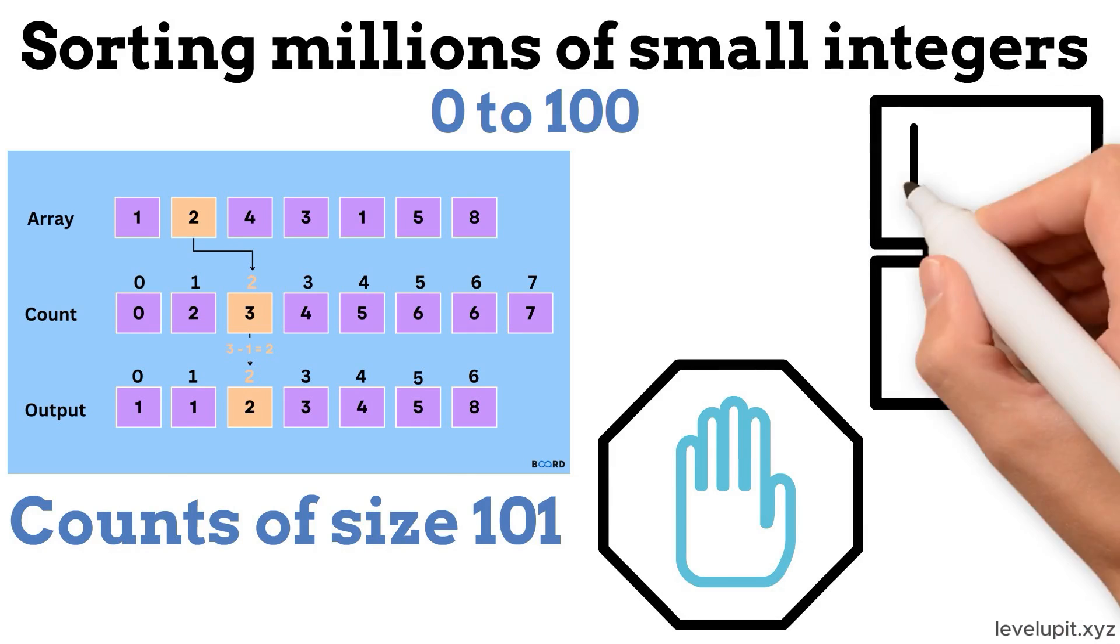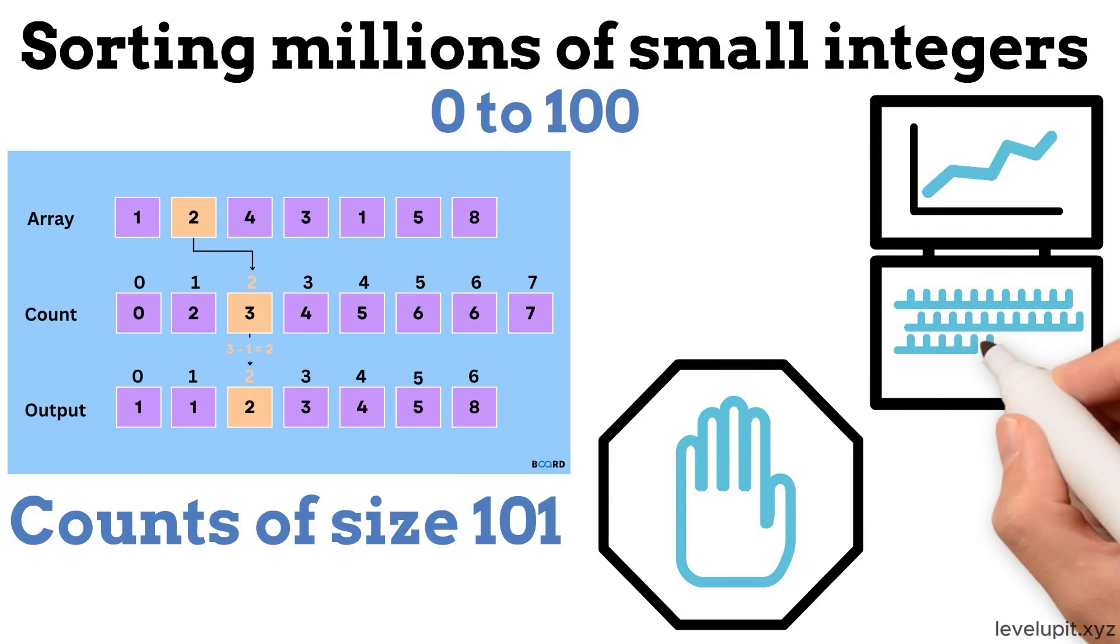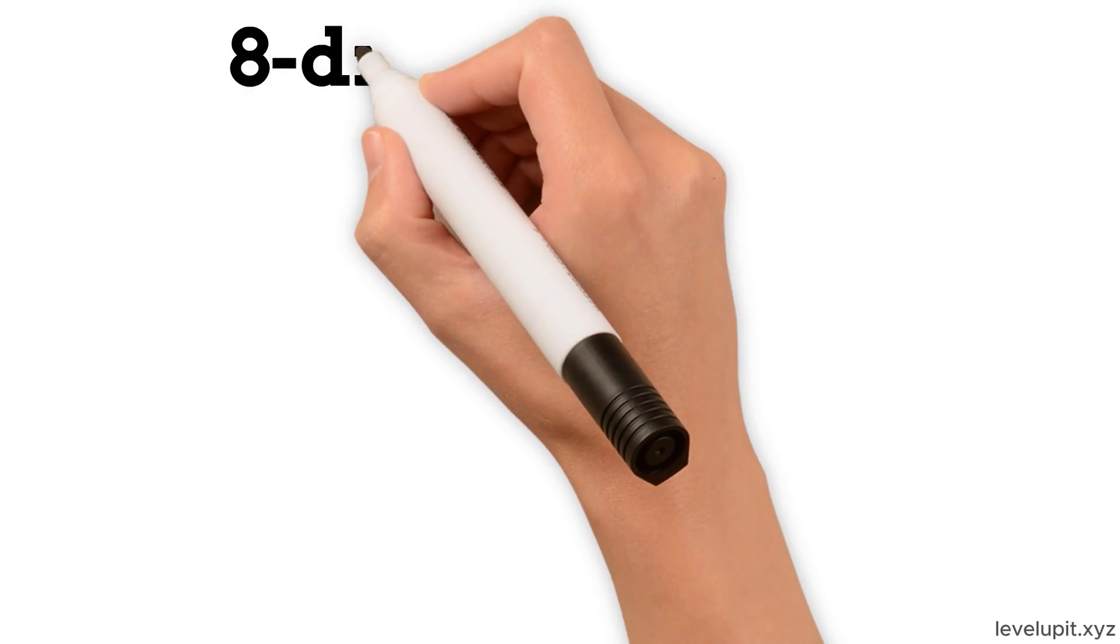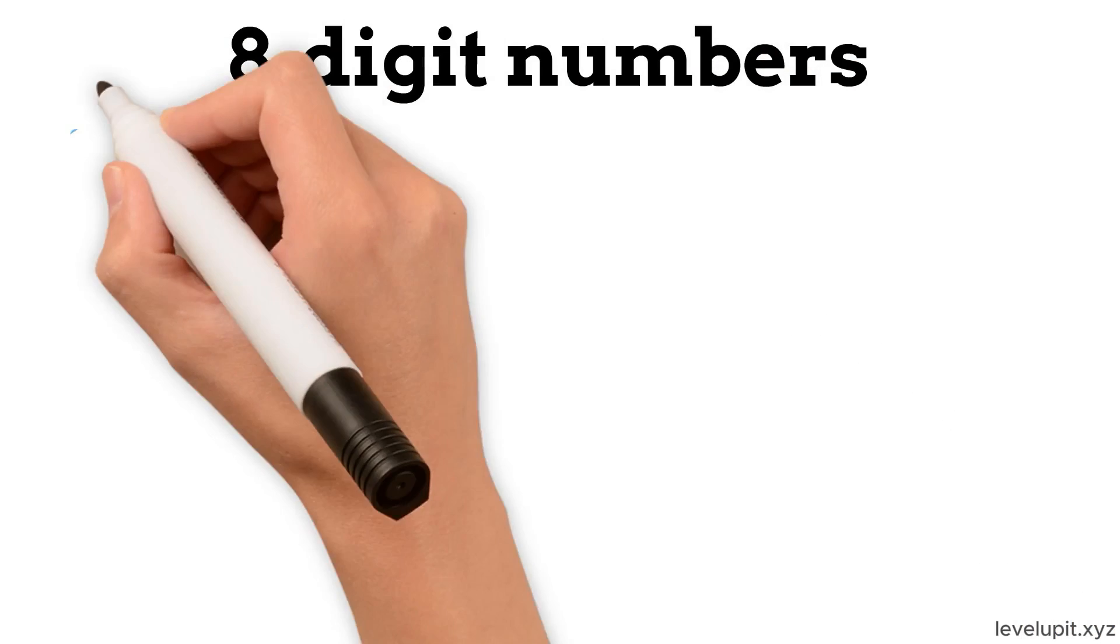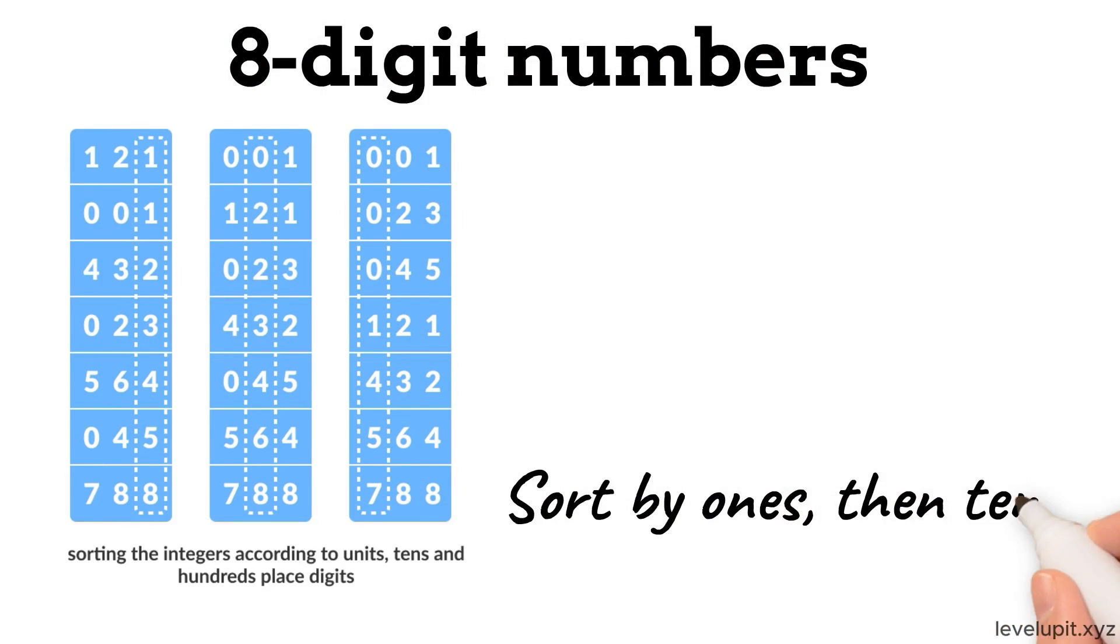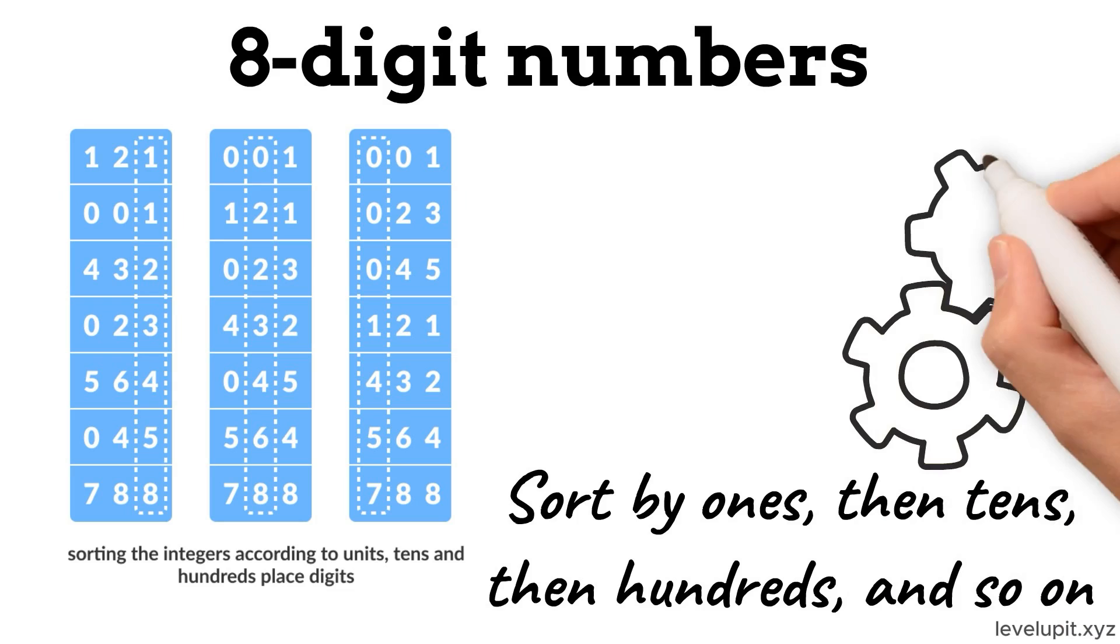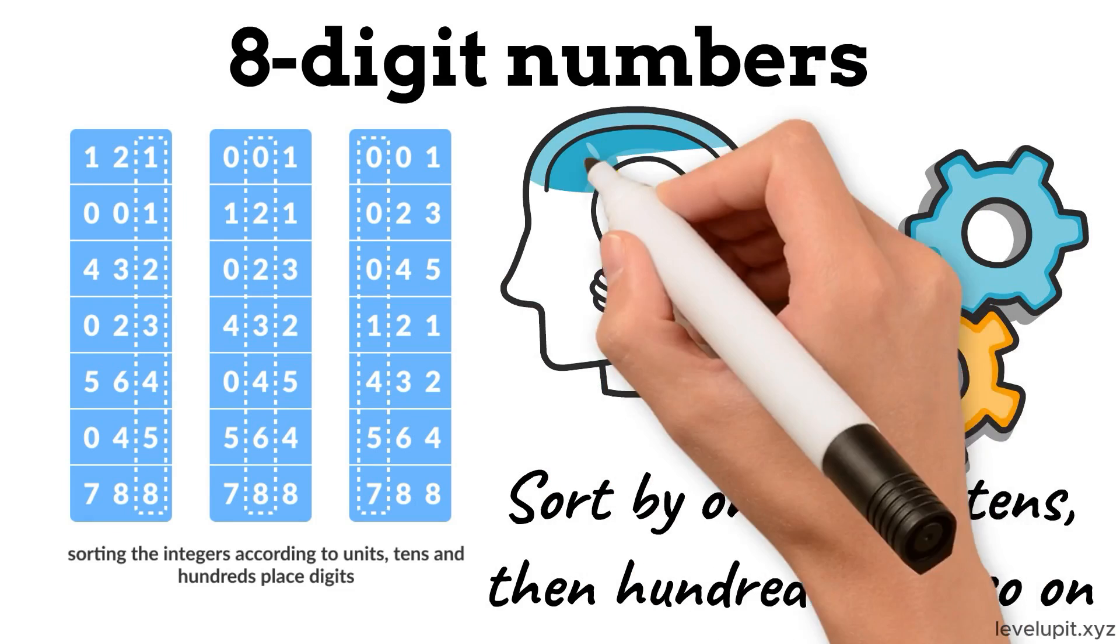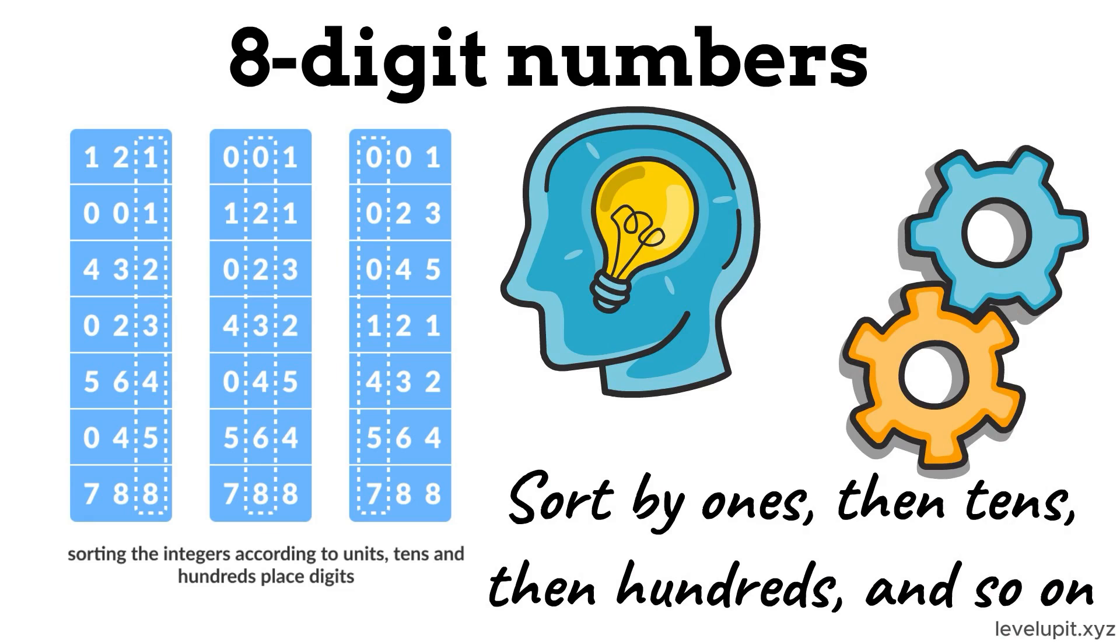The approach avoids pairwise comparisons entirely and screams on that specific shape of data. When handling IDs like eight-digit numbers where digits matter, radix sort can be a good fit. Sort by ones, then tens, then hundreds, and so on, each time using a stable bucket placement. After the final digit pass, the entire list is sorted. The key idea is that each pass preserves the work of prior passes.